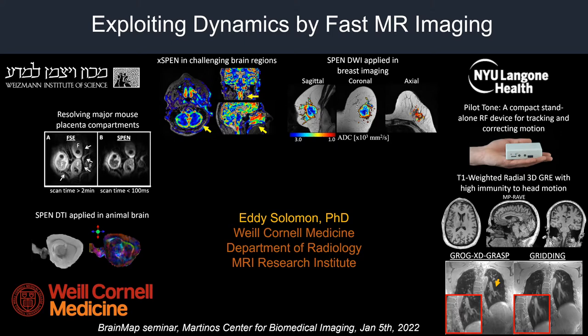Under the supervision of Professor Lucio Frydman, he developed novel MR methods based on spatiotemporal encoding principles. In 2018 he joined the radiology department at NYU as a postdoc fellow working closely with Professor Hersh Chandarana and Professor Tobias Block on the development of motion-robust solutions based on rapid non-Cartesian MR methods. Dr. Solomon is the owner of two US patents in the field of early detection of breast cancer, is an editorial member of Data in Brief and SEVER Journal, is a member of the NIH Quantitative Imaging Network working group, and received several Magna Cum Laude and Summa Cum Laude ISMRM awards.